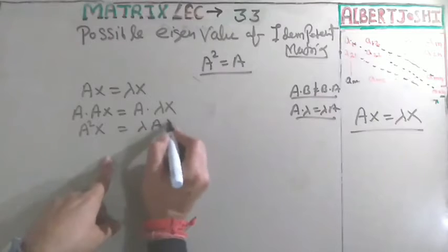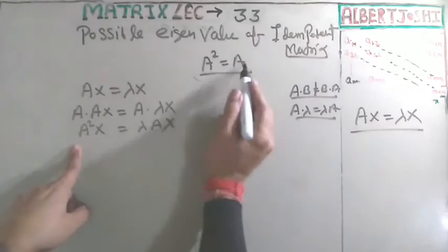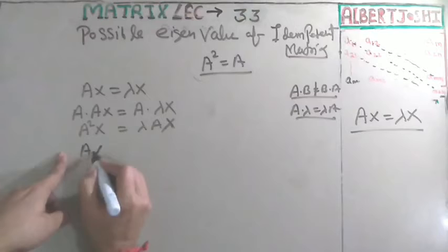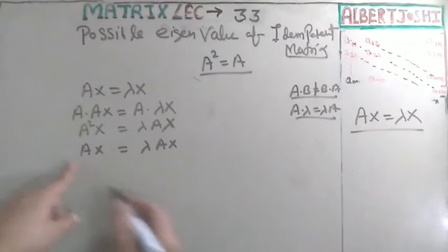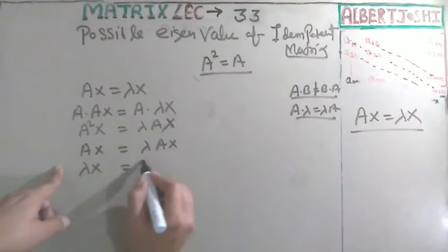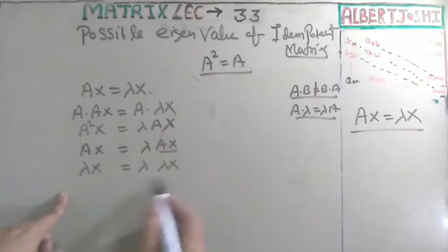So what about A² equals A? We already have given Ax equals λx. Since A²x equals λAx, and Ax equals λx, we have λx equals λ times λx. So after then you can say that Ax equals λ²x.